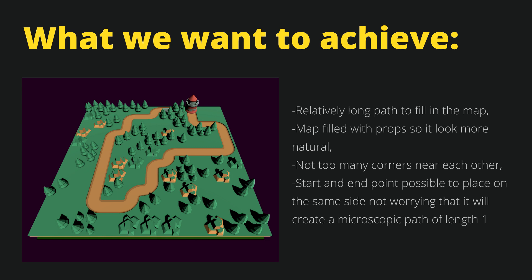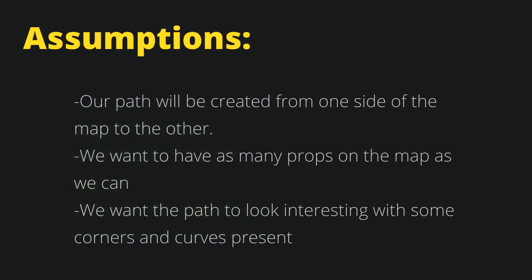Later, we will consider that we do not want to have many corners. Also, what I want to avoid is having a microscopic path. So our assumptions are: our path will be created from one side of the map to the other side, usually the opposite side. We want to have as many props on the map as we can, and we want our road to look natural — so we want some curves but not too many corners.